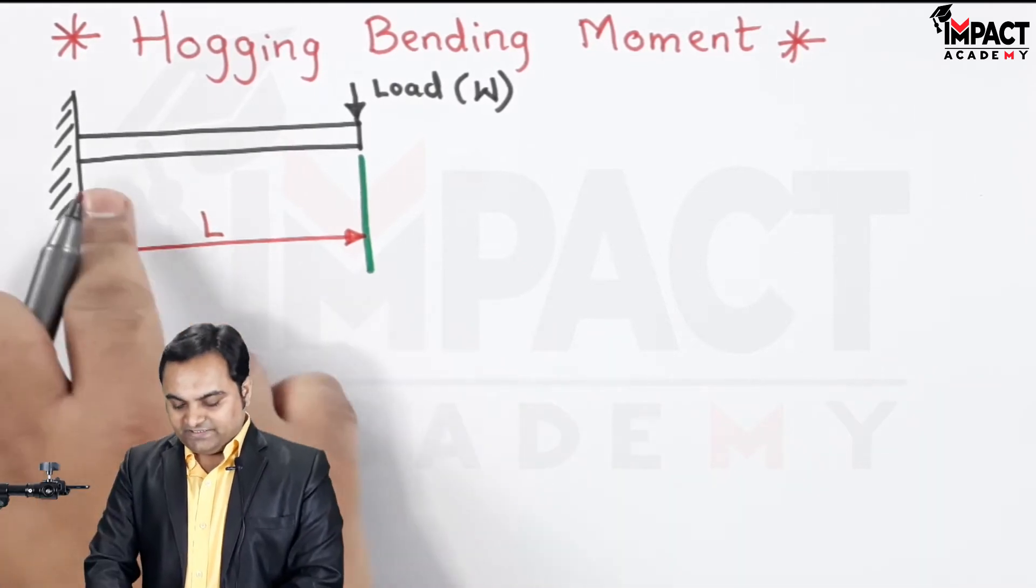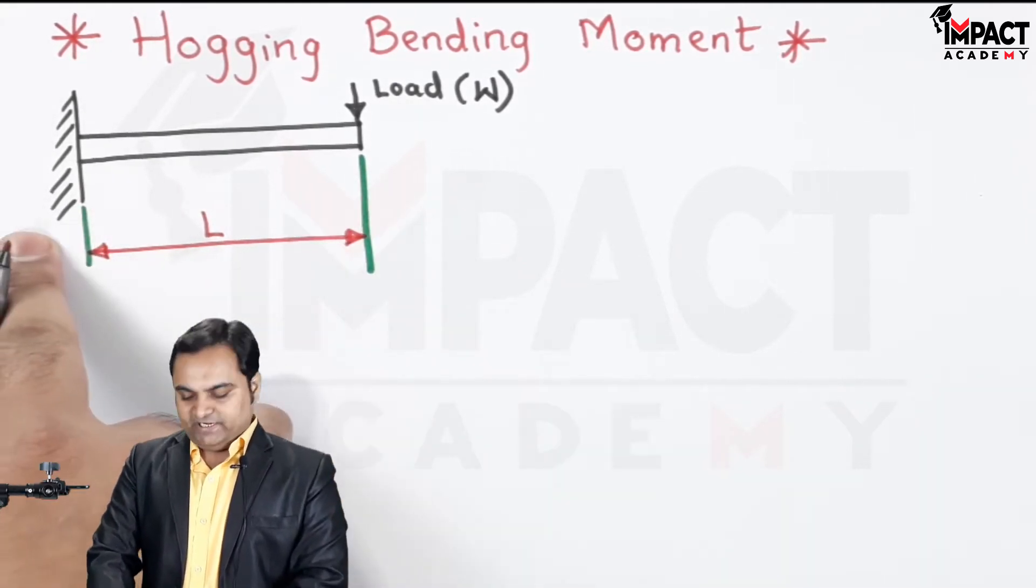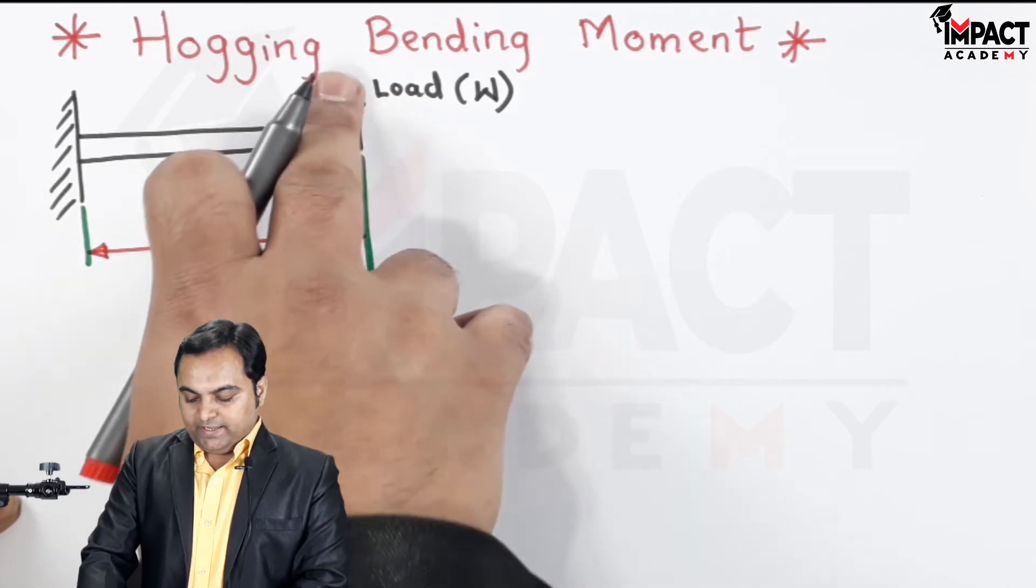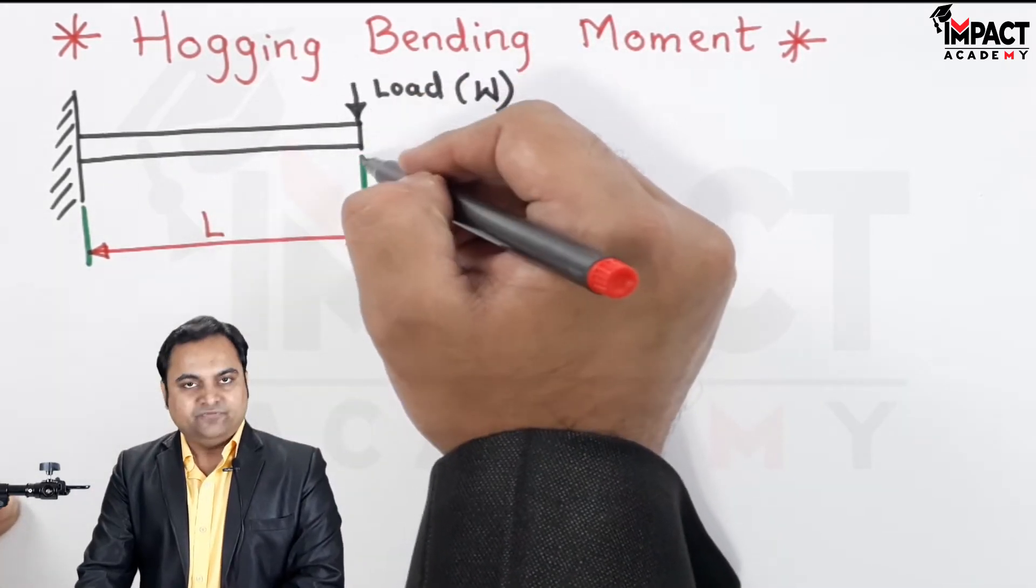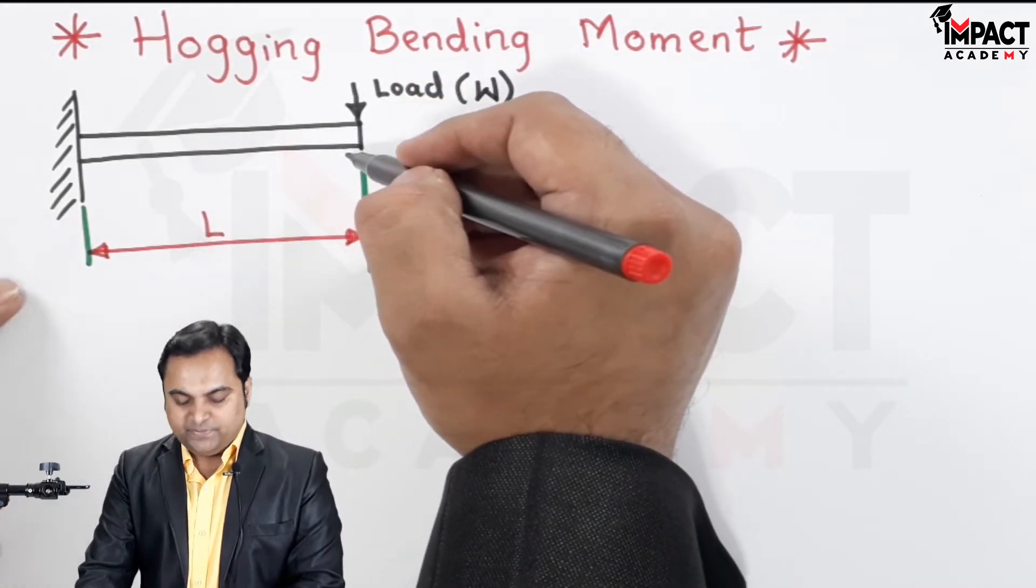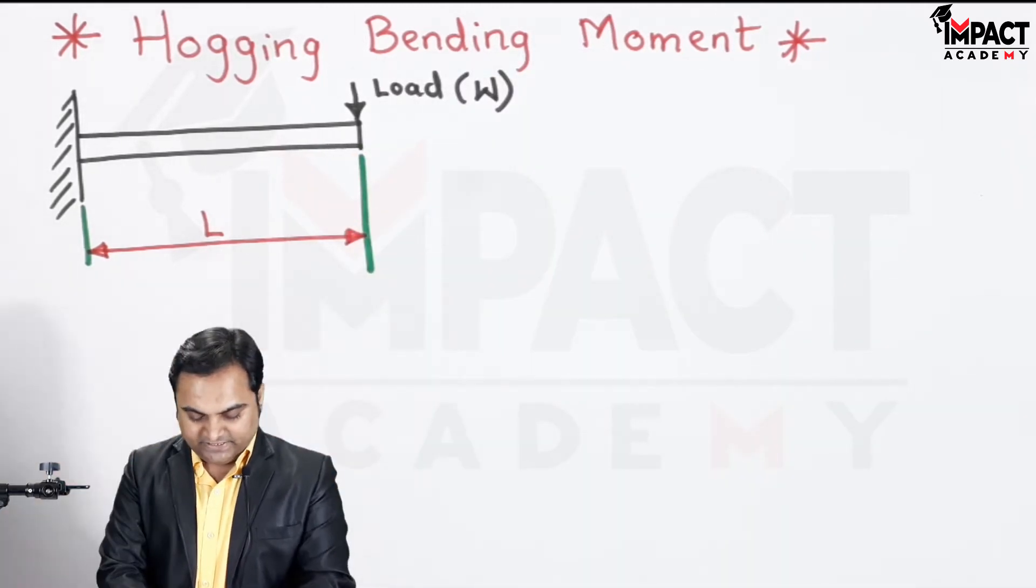Here there is a cantilever beam which is fixed at one end, free at the other end, subjected to a point load at the free end. Under the action of this load the beam is going to bend and it will bend in this way.